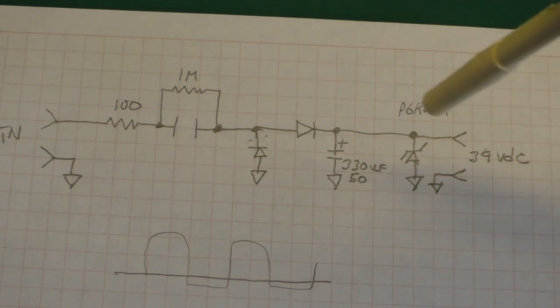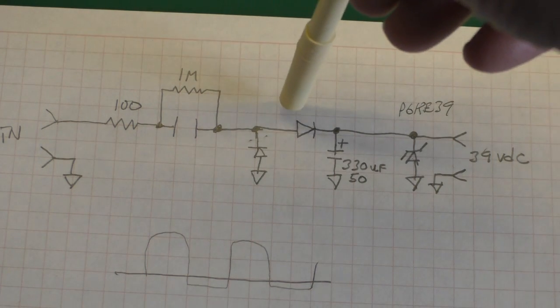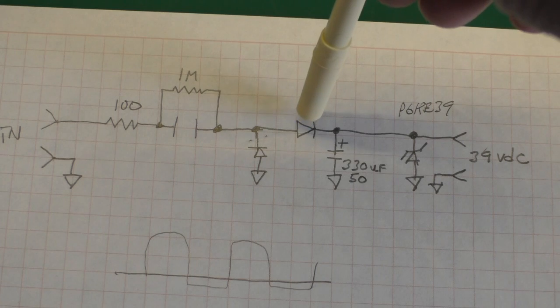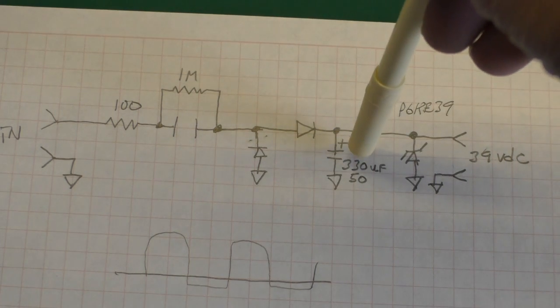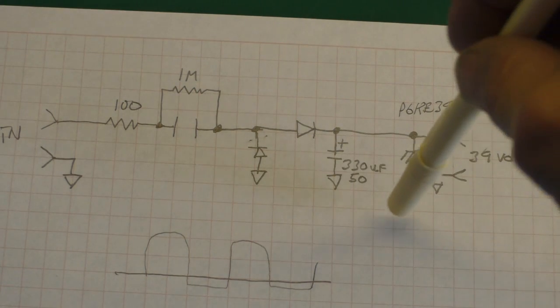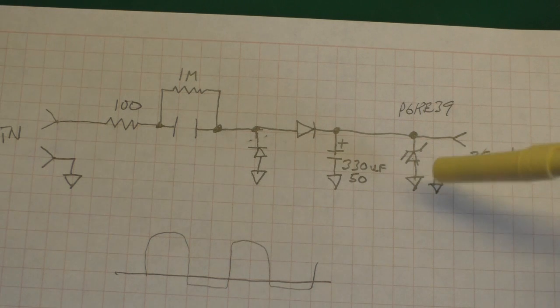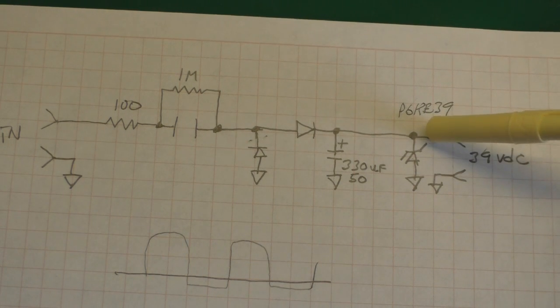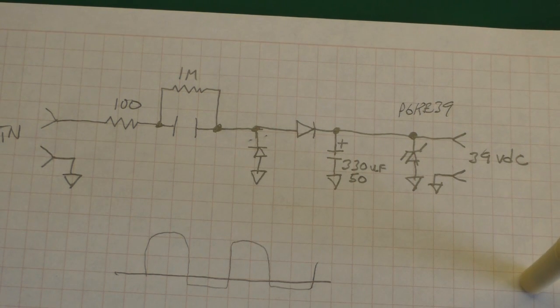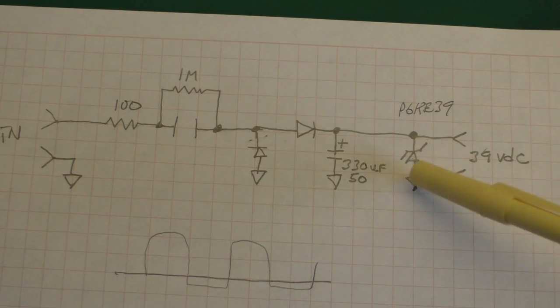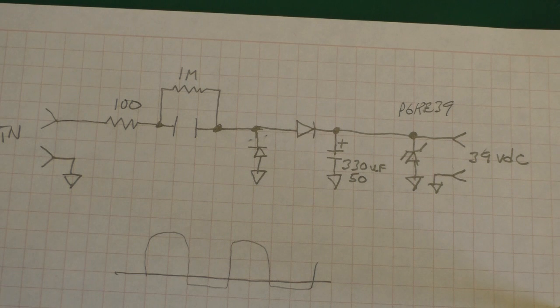From there it's just like any other AC to DC converter. It's going to go through the diode here, charge up the capacitor. This is a P6KE39 which is a 39 volt suppressor. This company is using it as a zener diode which I'm not overly thrilled with, but they've been doing it for a few years so seems to work for them.